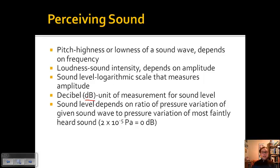The sound level depends on the ratio of pressure variation. Ratio is a division of a given sound wave to pressure variation of the most faintly heard sound, which occurs at 2 times 10 to the negative fifth pascals. Pascals is a unit of pressure. We call this amount of pressure zero decibels.